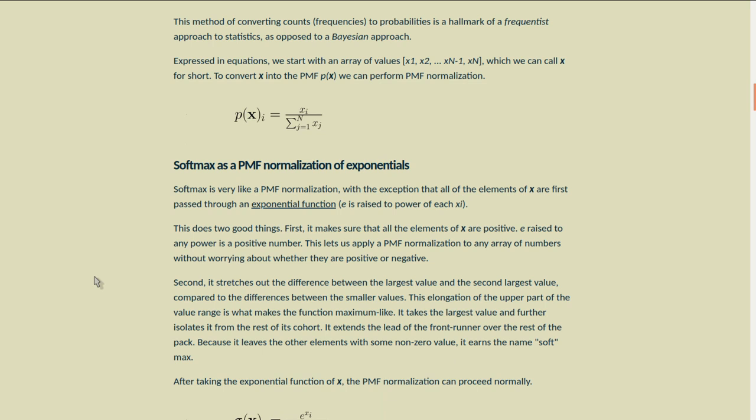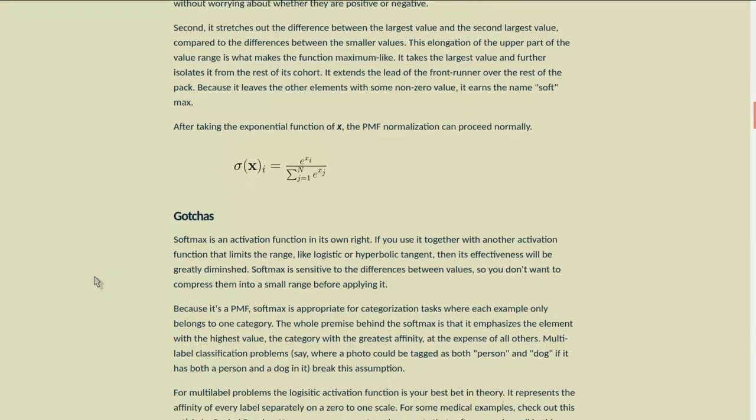Second, it stretches out the difference between the largest value and the second largest value, compared to the differences between the smaller values. This elongation of the upper part of the value range is what makes the function maximum-like. It takes the largest value and further isolates it from the rest of its cohort. It extends the lead of the frontrunner over the rest of the pack. Because it leaves the other elements with some non-zero value, it earns the name softmax, as opposed to a maximum function or a hardmax.